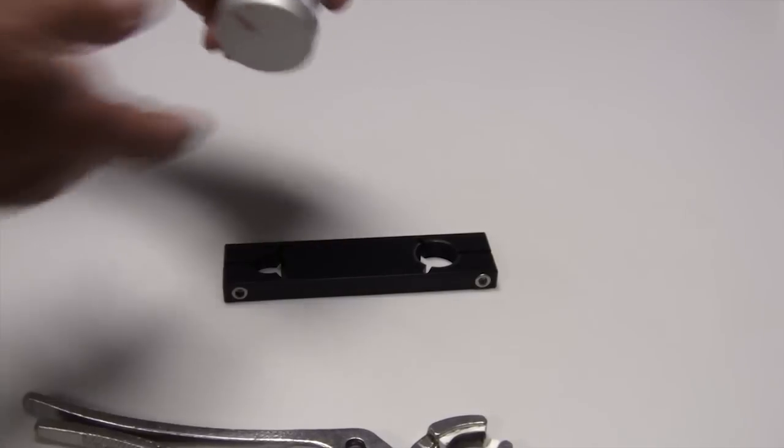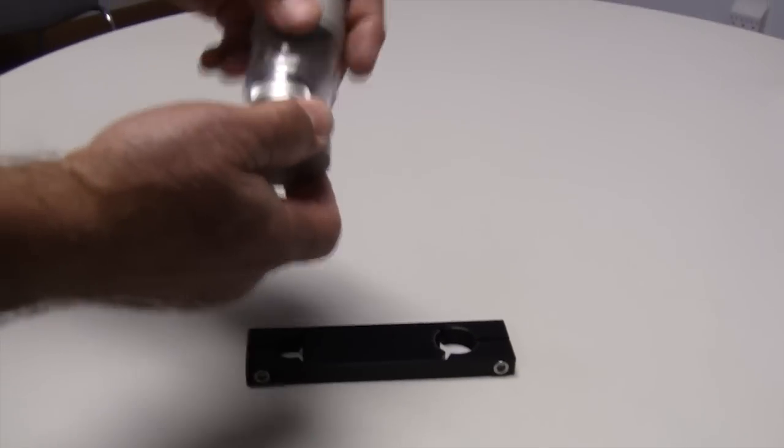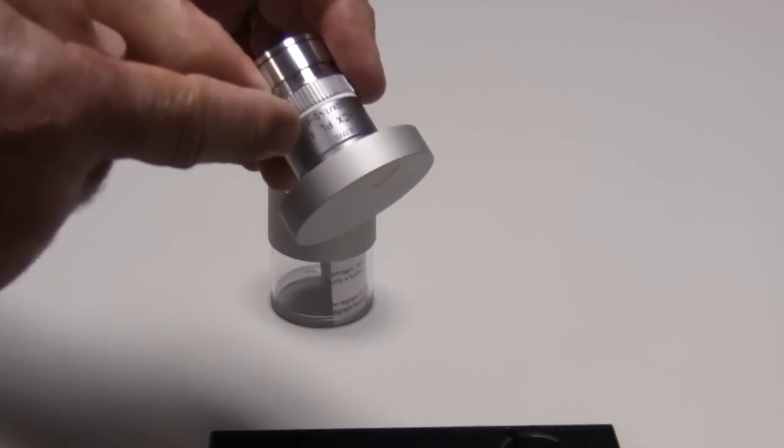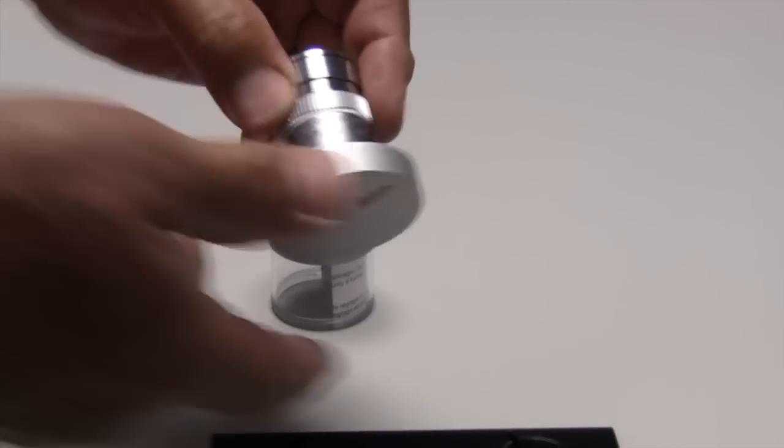Here we're going to go over removing the sleeve off of a Leica objective. This is the sleeve that has the writing on it that tells you the magnification and NA of the objective.